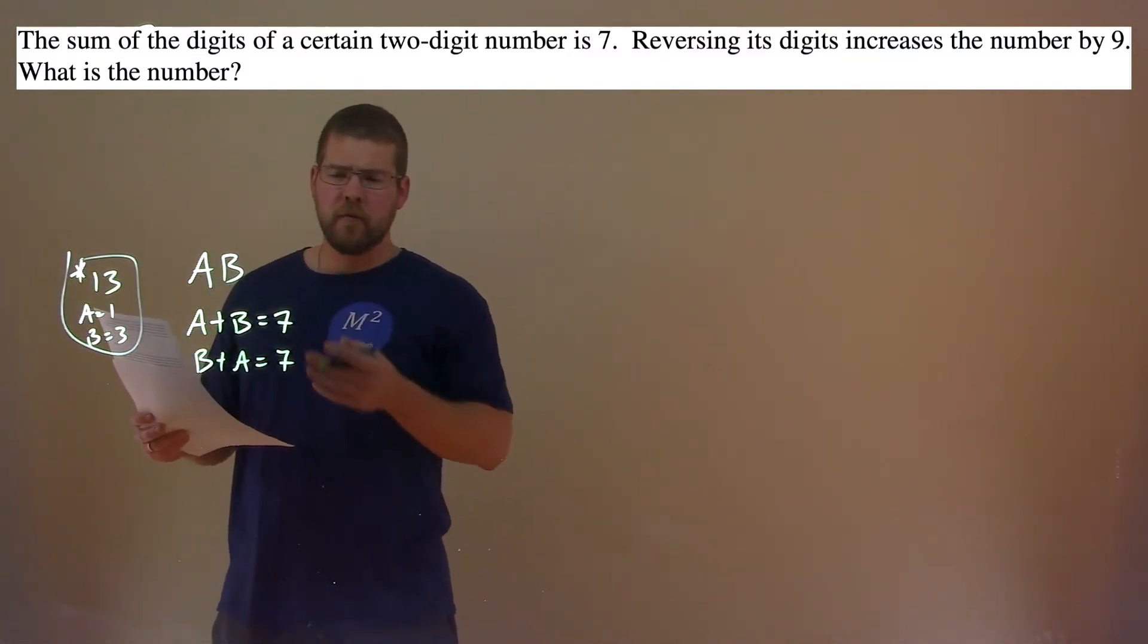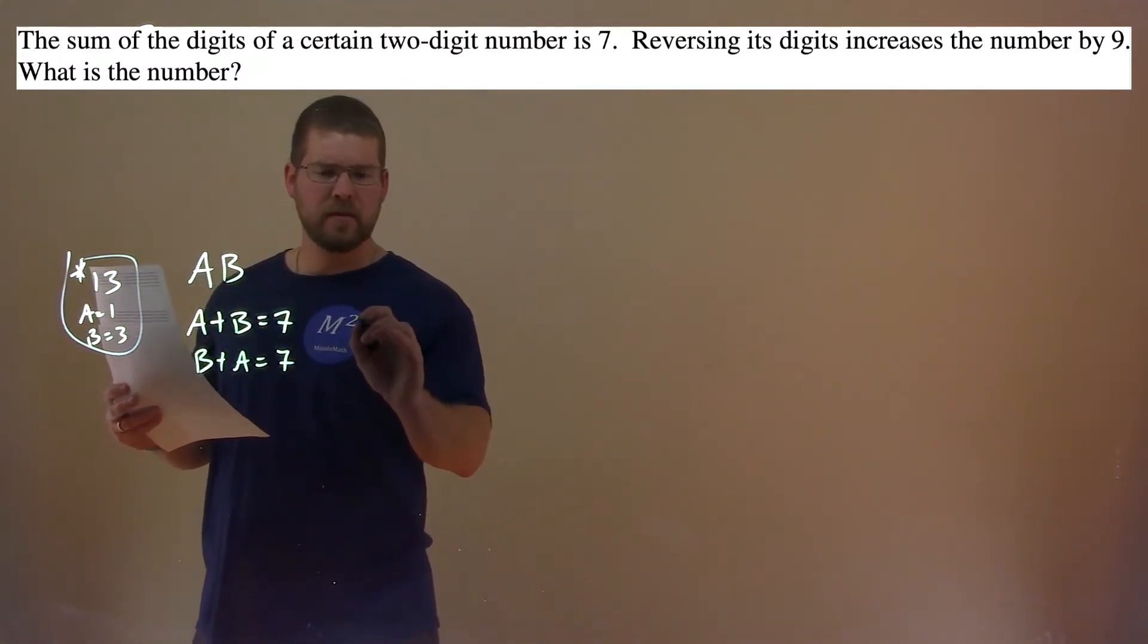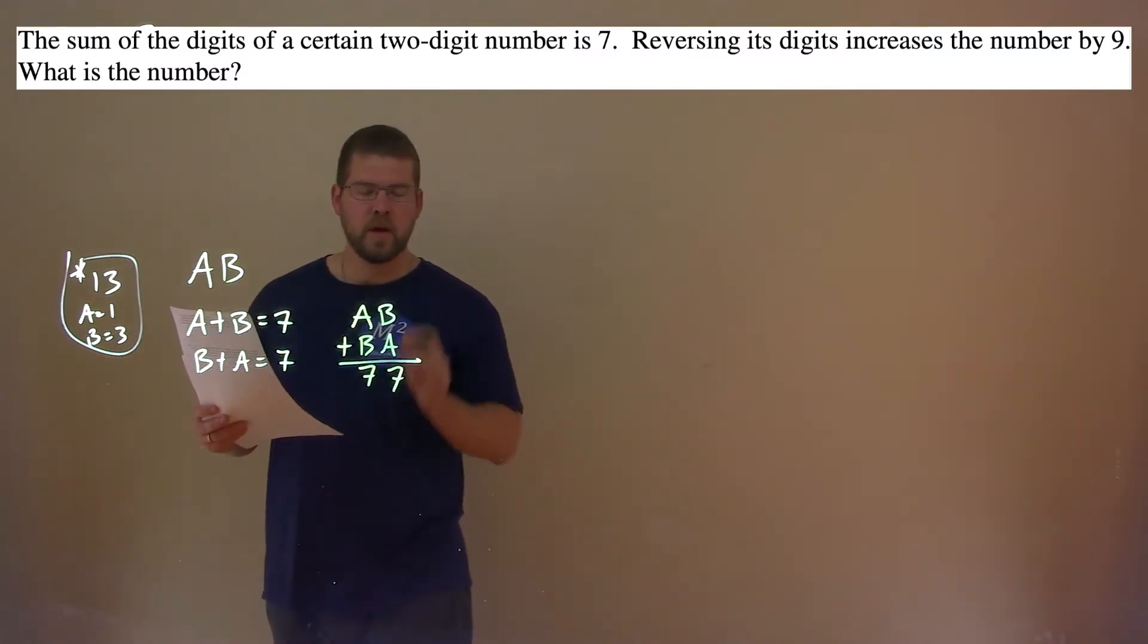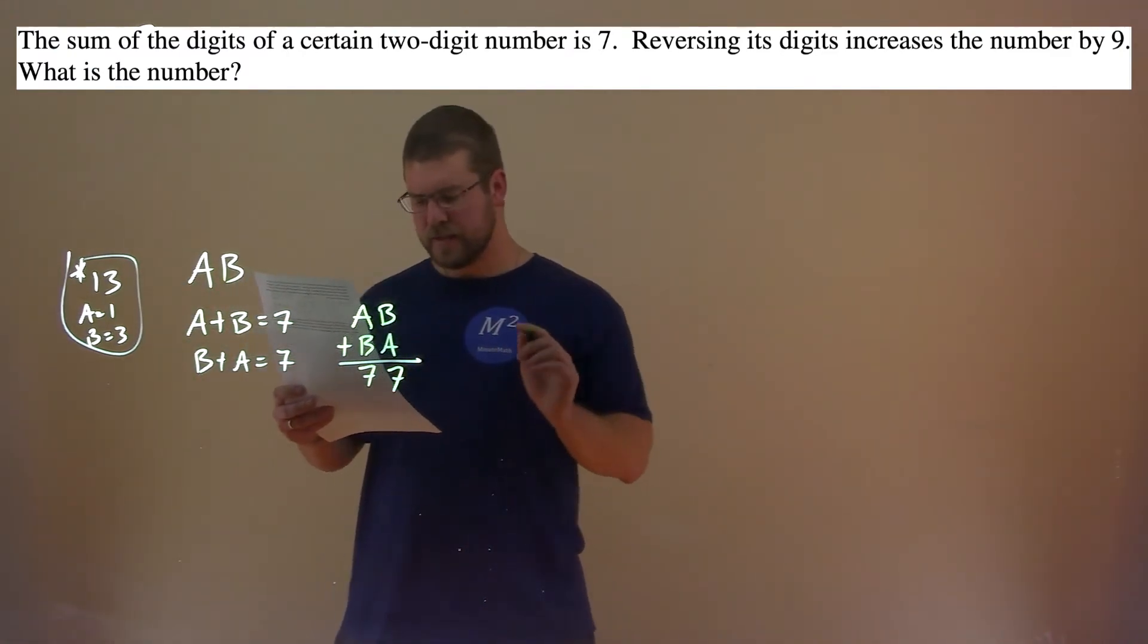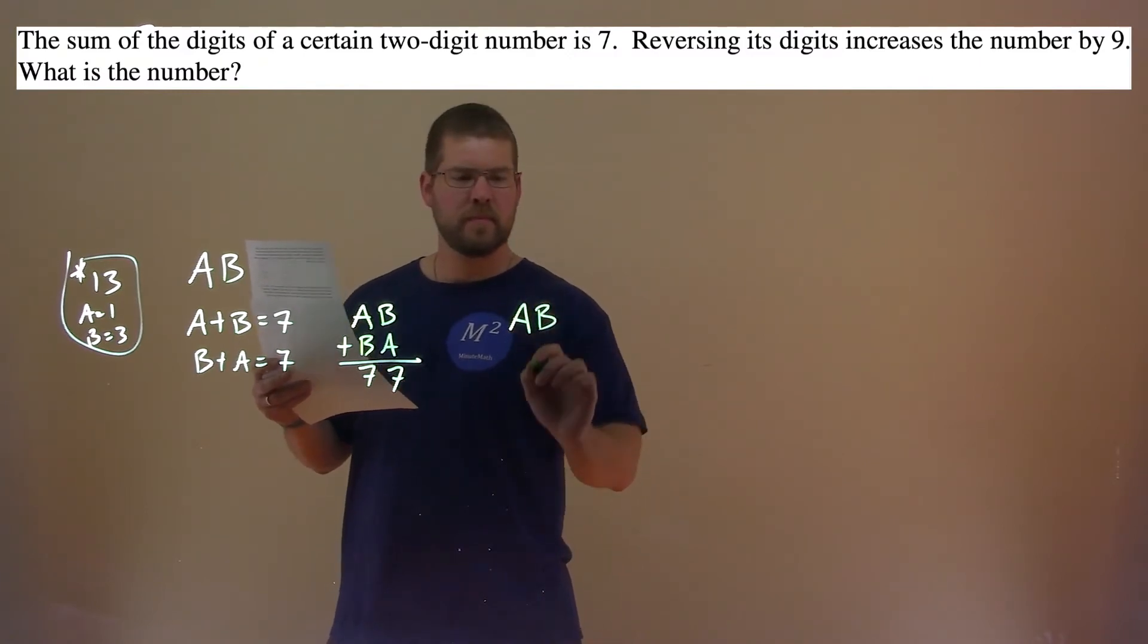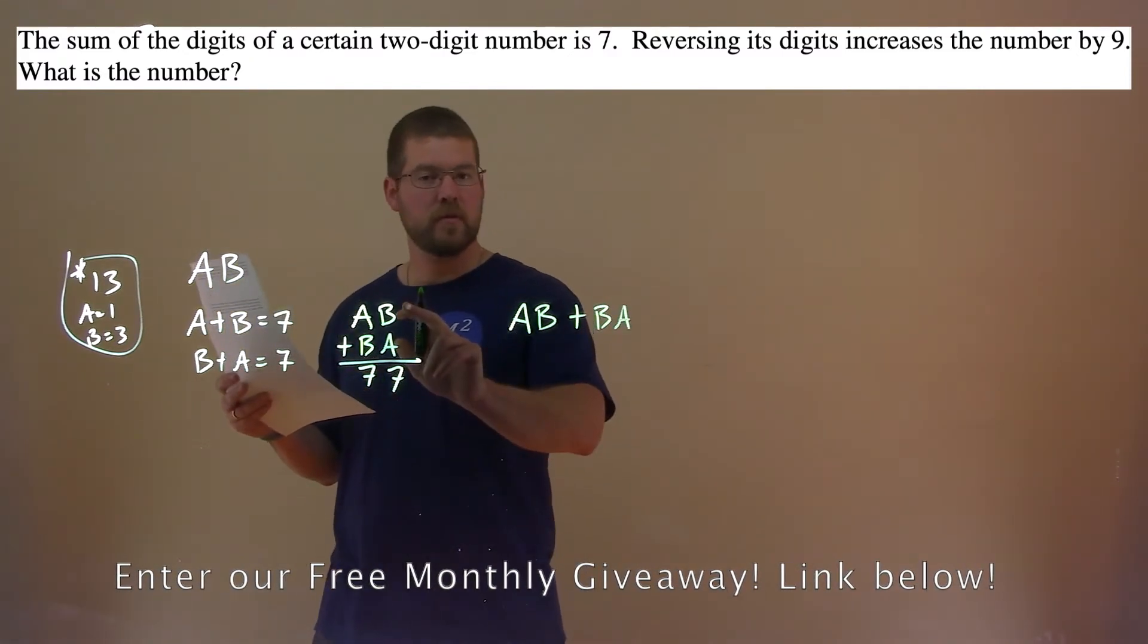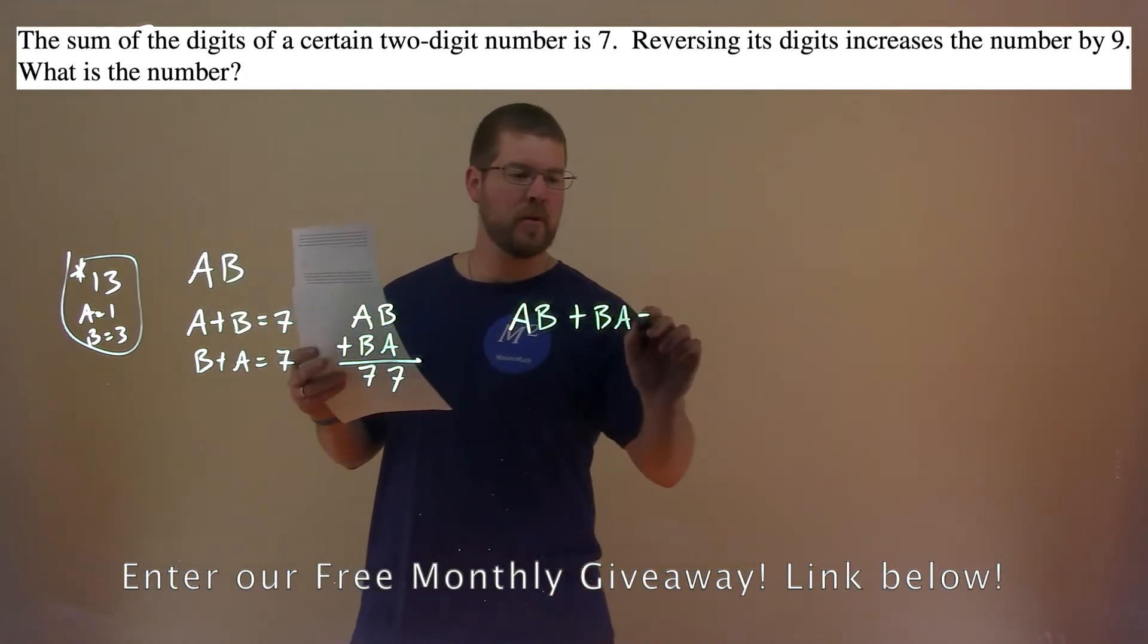Well, if A plus B is 7 and B plus A is equal to 7, that means AB, the two-digit number, and BA when we add them together gives us 77. So AB is the two-digit number we're looking for, and BA is when we flip the letters around. We add them together, we know it's 77.